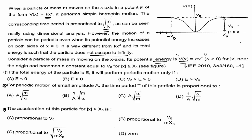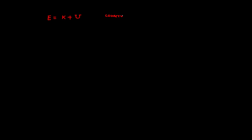The total energy of the particle is the sum of kinetic energy plus potential energy. If conservative forces are involved and there is no loss of energy, then as kinetic energy increases potential energy decreases and the total energy will be conserved.